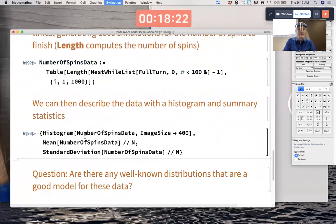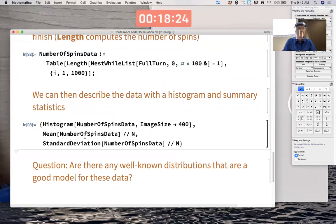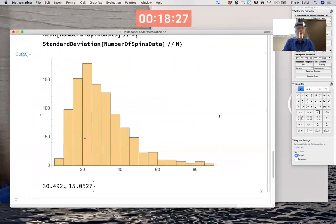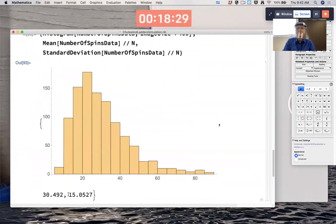So now I'm using Table to essentially do this over and over again and find the length of this list, which is the number of spins. Except I have to subtract one from it because effectively I need to take off counting zero. That's some data. I can look at these data.